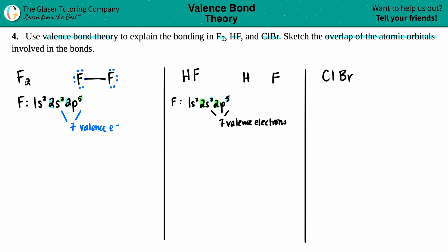Seven dots around fluorine. For hydrogen, the electron configuration is just 1s¹, so the highest number is one - hydrogen has only one valence electron. These electron configurations are going to make sense in a little bit when we get to valence bond theory. But for now, this is the Lewis structure for HF. Now let's quickly do ClBr.